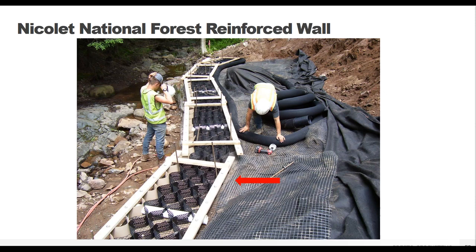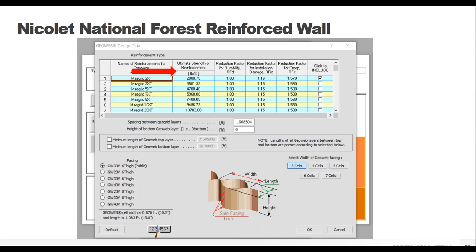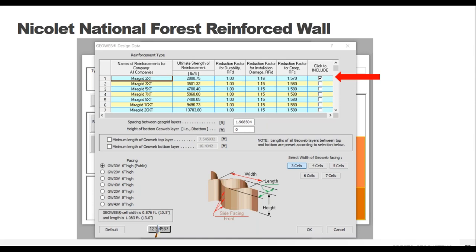The geogrids are placed between layers of GeoWeb panels as close to the front of the wall as possible without exposing the ends. The ultimate strength of reinforcement starts off as the weakest and gets quite strong, so you'll be able to find the one that works for you. Generally you want to stick with the weakest grids that will do the job to keep costs reasonable. Next is a set of reduction factors for each grid determined by the manufacturer - these can't be changed, so they're more of an FYI. Finally, there's a checkbox where you choose which geogrids you want to include in your analysis.